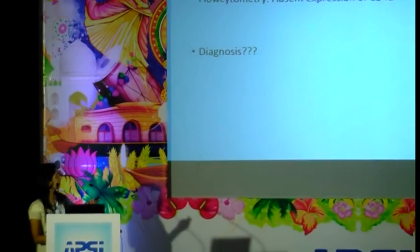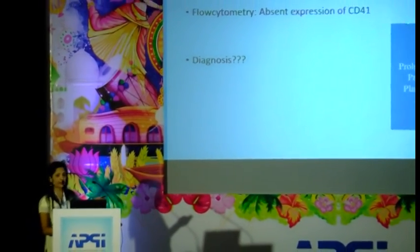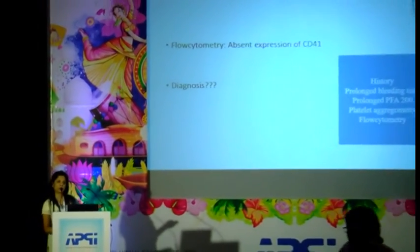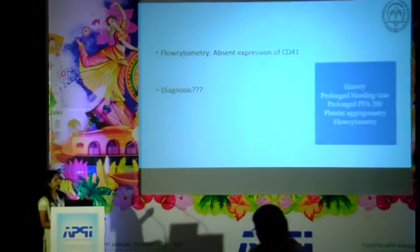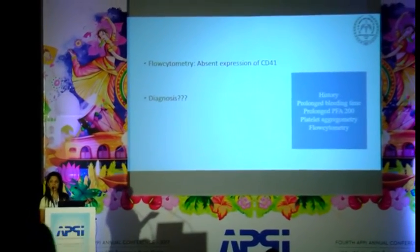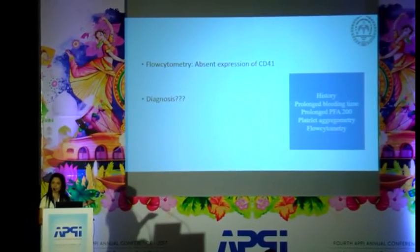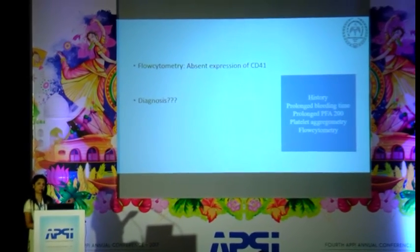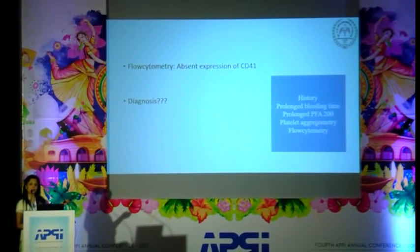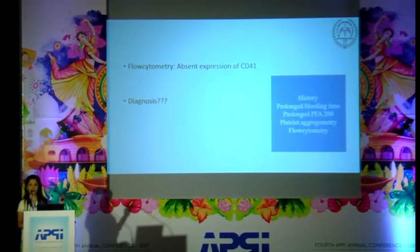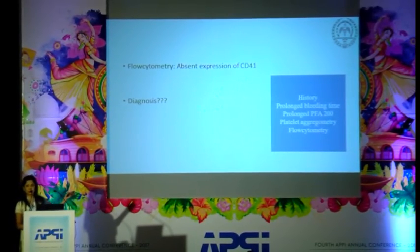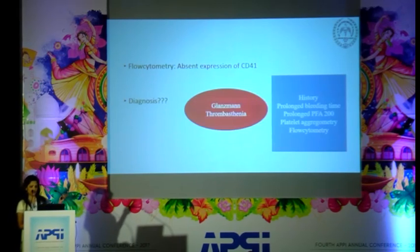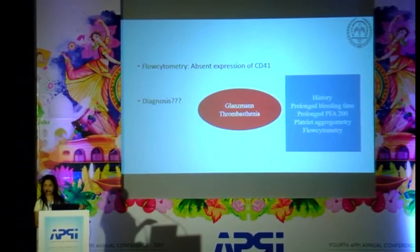We did flow cytometry showing absent expression of CD41. Any diagnosis? We have a patient with prolonged bleeding time, abnormal PFA closure, a response to ristocetin, absent response to all other agonists, and absent expression of CD41. The diagnosis is clear — we are dealing with a patient with Glanzmann thrombasthenia.